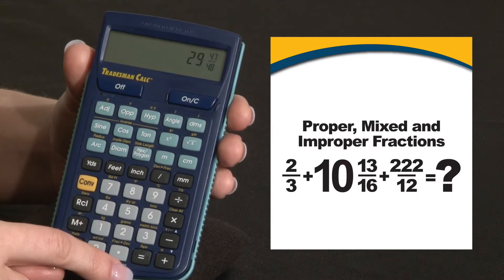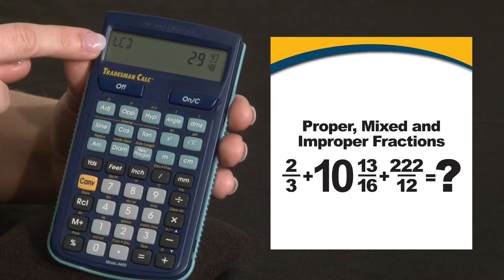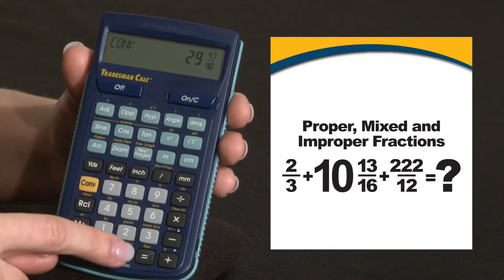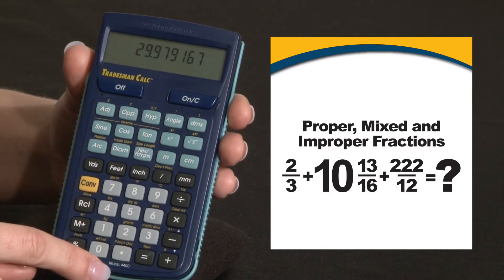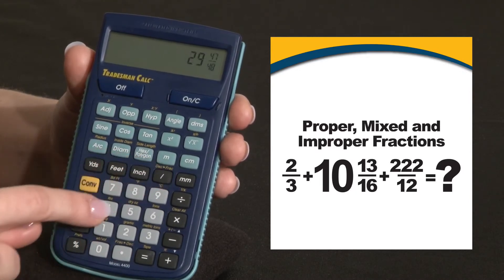If we press the fraction bar, LCD indicates that this is the lowest common denominator form. You can convert to a decimal format by pressing convert point or convert back to a fraction by pressing convert fraction bar.